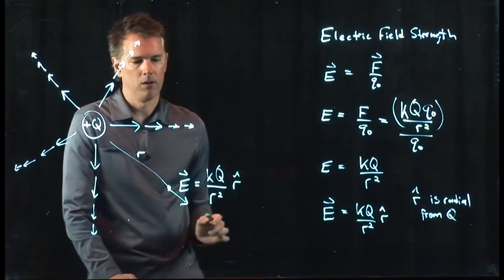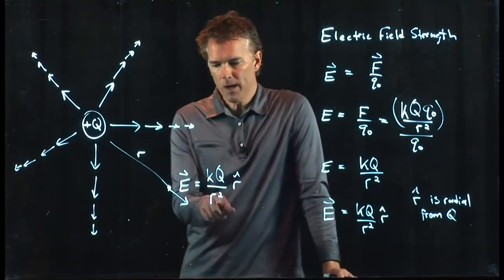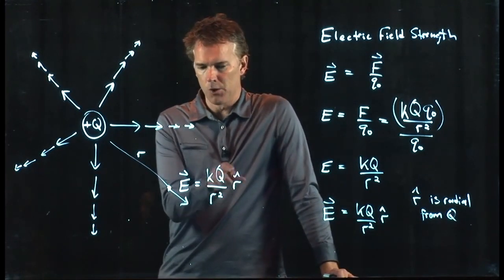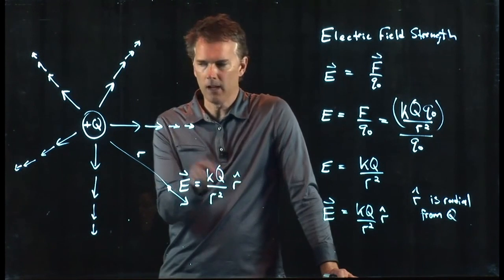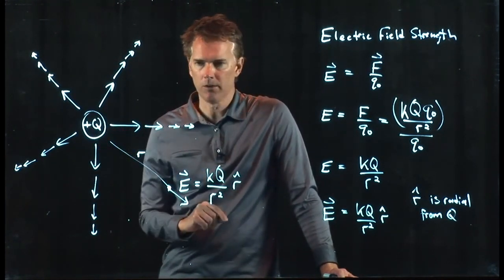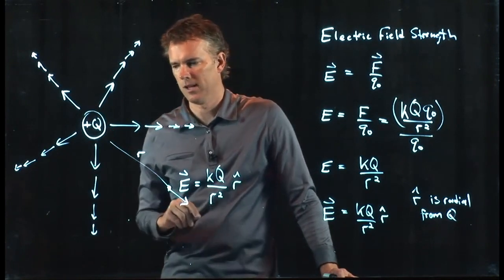It gets weaker as you go out because it falls off like 1 over R squared. The direction is always away from the point charge and it has a strength that increases with the amount of charge capital Q. See you soon.